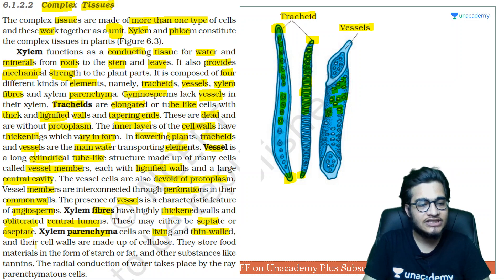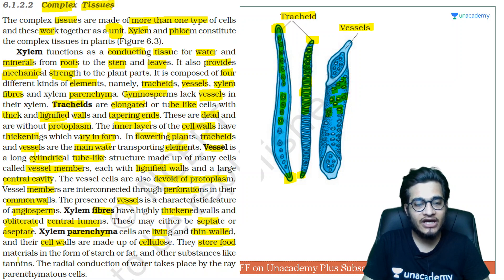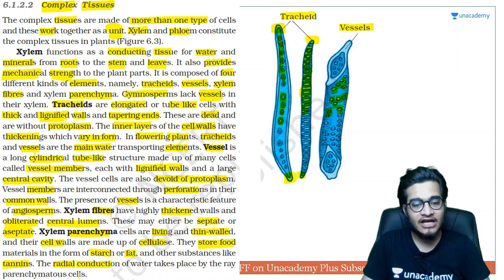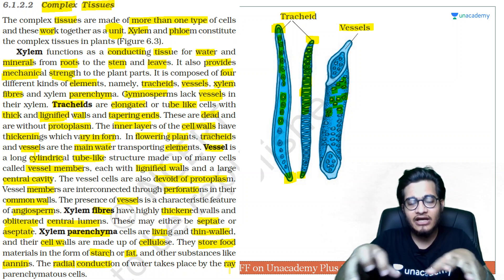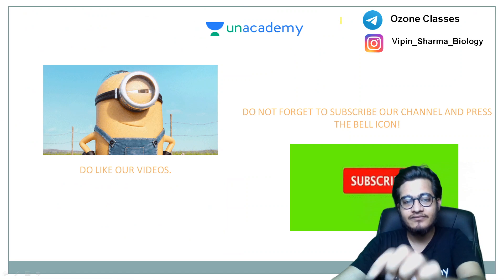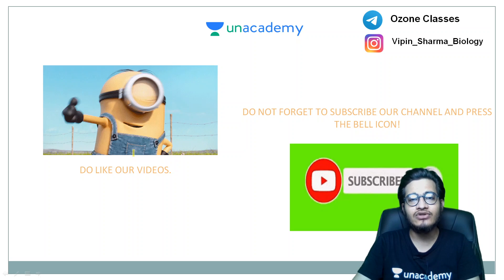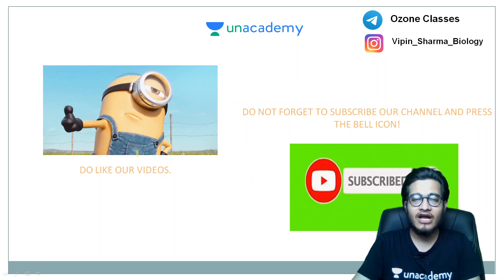Xylem parenchyma consists of living thin-walled cells with a cellulose cell wall. Their function is food storage — they can store food in the form of starch, fat, or tannins, which are polyphenolic compounds. Ray parenchyma cells carry out radial conduction of water — when the stem is very thick, water also needs to travel radially, and that is done by the ray parenchyma cells.